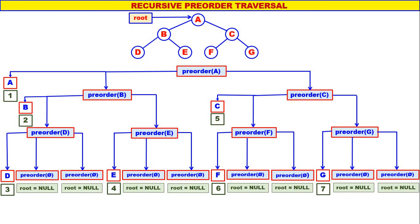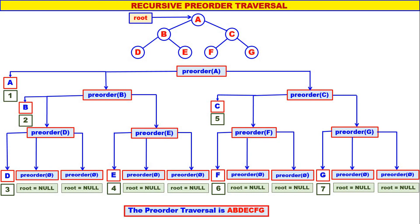So that is all for the recursive tree. A was the first one to be displayed, B was the second, D was the third, E was the fourth, C was the fifth, F was the sixth, and G was the seventh. Therefore, the pre-order traversal is A, B, D, E, C, F, G. Recursive pre-order traversal is quite simple and straightforward.